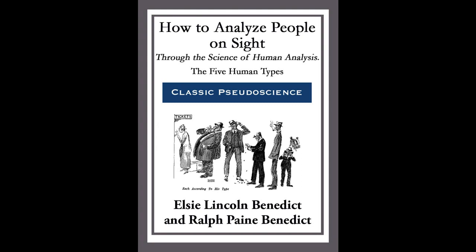Section 1 of Chapter 3 of 'How to Analyze People on Sight.' This is a LibriVox recording. All LibriVox recordings are in the public domain. For more information or to volunteer, please visit LibriVox.org. Recording by Paul Andrews. 'How to Analyze People on Sight Through the Science of Human Analysis: The Five Human Types' by Elsie Lincoln Benedict and Ralph Payne Benedict. Section 1 of Chapter 3.